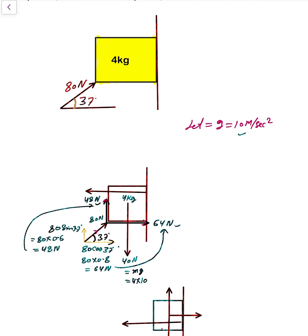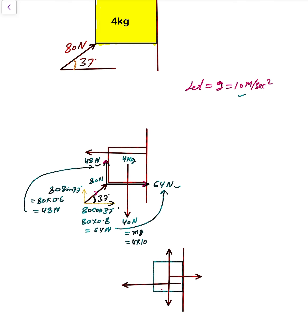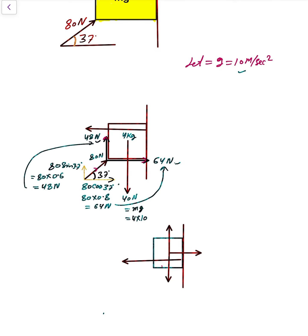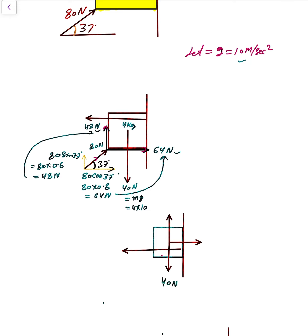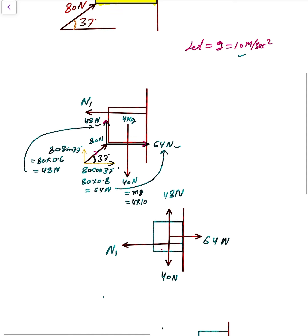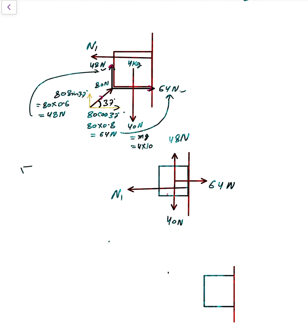Now, looking at the forces: 40 Newton downward, 48 Newton upward, and 64 Newton horizontal. The normal force N1 acts horizontally from the wall. Since there is no motion in the horizontal direction, equilibrium gives N1 = 64 Newton.